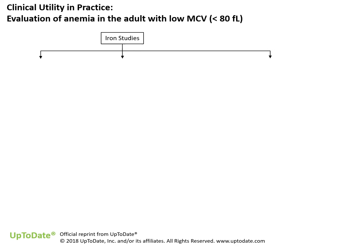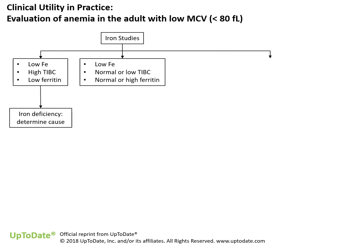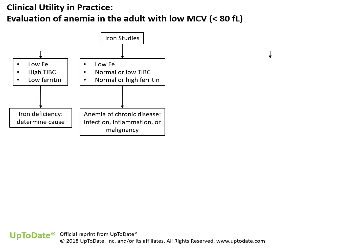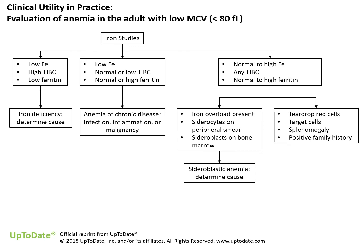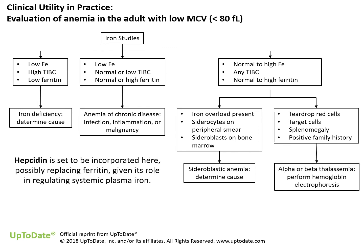A clinical utility in practice can be summarized with an assessment of normocytic or microcytic anemia. In this case, iron studies are the current standard of care. Low iron, high total iron binding capacity (TIBC), and low ferritin is predictive of iron deficiency. Low iron with normal or low TIBC and normal to high ferritin yields a diagnosis of anemia of chronic disease. Normal to high iron with any TIBC and normal to high ferritin has two possible outcomes: it could be indicative of iron overload as in sideroblastic anemia, or, if red blood cells have a teardrop shape or splenomegaly is present, the patient likely has some form of thalassemia. Hepcidin is being evaluated for incorporation into the diagnostic tree and may, in fact, replace ferritin altogether.